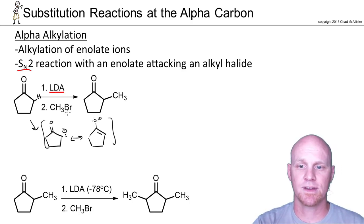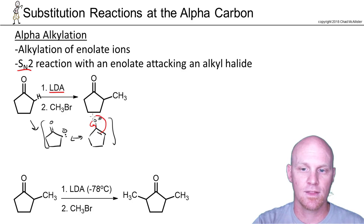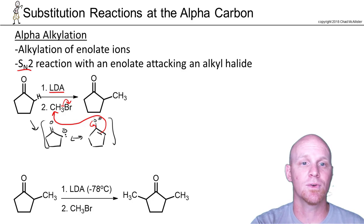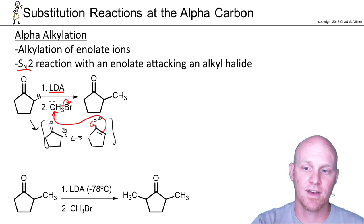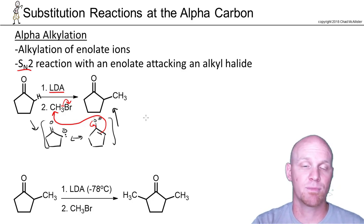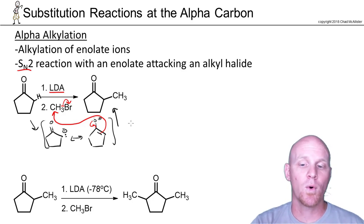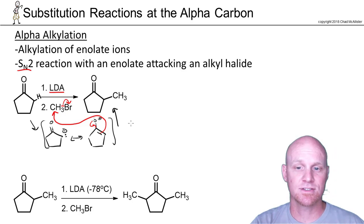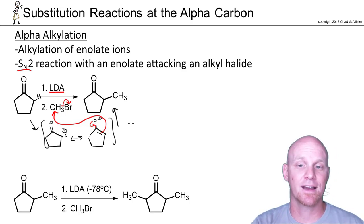From here, we'll simply attack the CH3Br — the methyl bromide — in an SN2 reaction. We'll bring these electrons down and come and attack, breaking the bond of the leaving group. Just straight up SN2 in that second step, and that gets you to your product. The whole mechanism is just a deprotonation step and then nucleophilic attack.